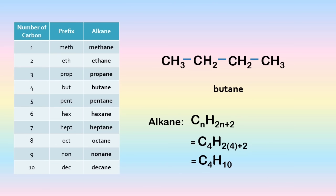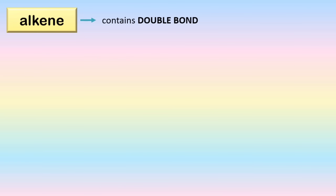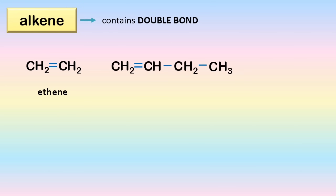Now let's proceed to alkenes. Alkenes contain a double bond between two carbons. For example, two carbon atoms with a double bond — both carbons will only need two hydrogen each to become stable since they already share two electrons with each other. To name an alkene, first find the location of the double bond, then number the carbons starting near the double bond. In this example: carbons one, two, three, four — the double bond is at carbon one, so the name is 1-butene.